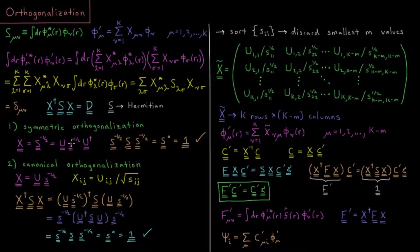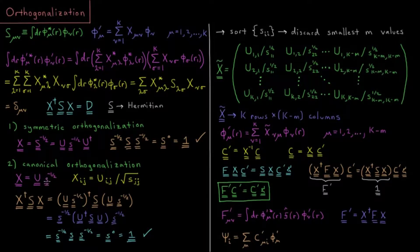In both cases we're doing the same thing, but there's an intermediate step in canonical orthogonalization that gets rid of the headaches that occur when some diagonal elements of the S matrix are very close to zero, making inversion problematic.